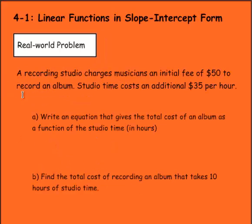Let's solve this problem. A recording studio charges musicians an initial fee of $50 to record an album. Studio time costs an additional $35 per hour. So it asks us to write an equation that gives the total cost of an album as a function of the studio time in hours. So the time will be our input here. So we would say y equals mx plus b. And let's find out what the slope and the y-intercept would be. Every single hour that the musician spends, they spend $35. So we would say 35 times x. And then that initial fee is $50, so they pay that no matter what. So here would be my equation: y equals 35x plus 50.